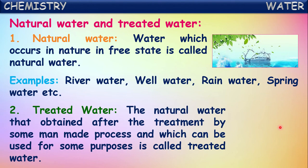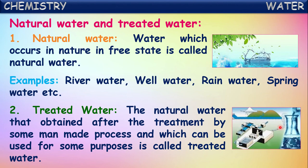Treated water is natural water obtained from different sources that has been treated by man-made processes and which can be used for specific purposes. Before using water in different purposes it is treated with certain processes to remove unwanted materials present in it.